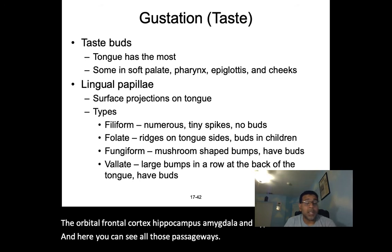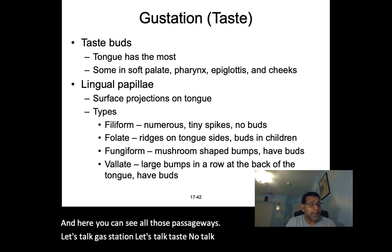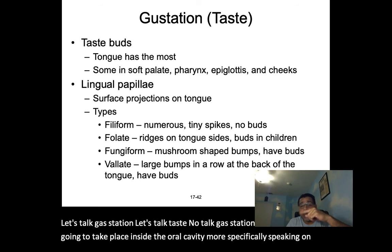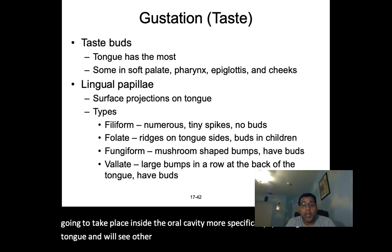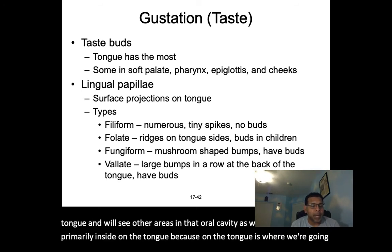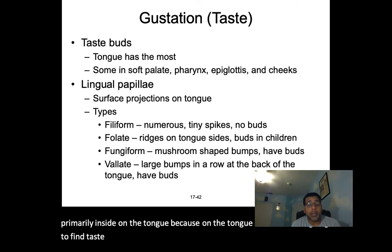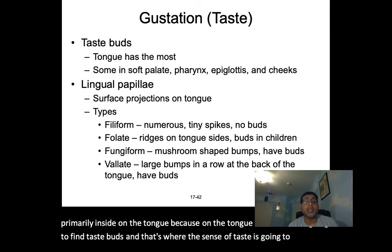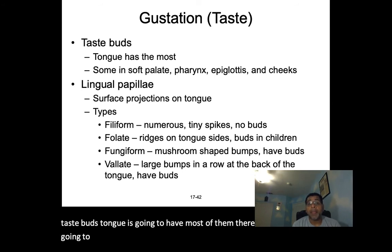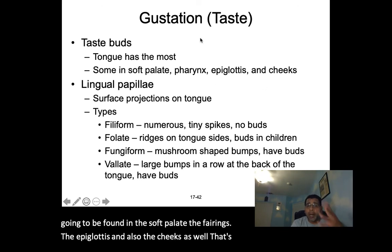Let's talk gustation — taste. Taste takes place inside the oral cavity, more specifically on the tongue, though taste buds are also found in the soft palate, pharynx, epiglottis, and cheeks. The tongue is where we primarily find taste buds.